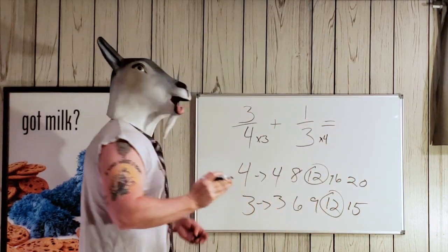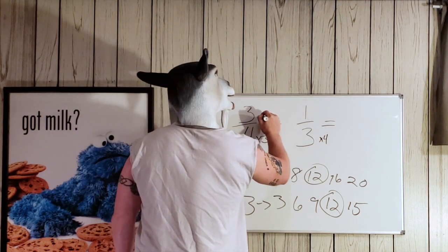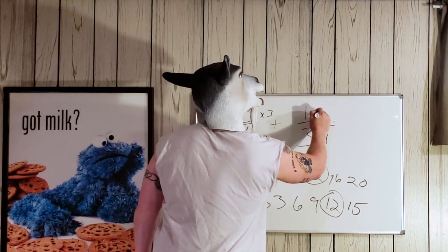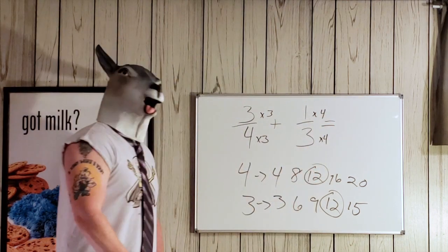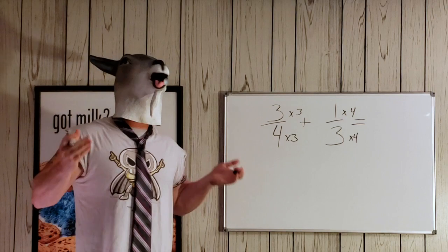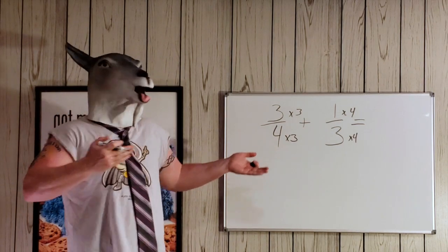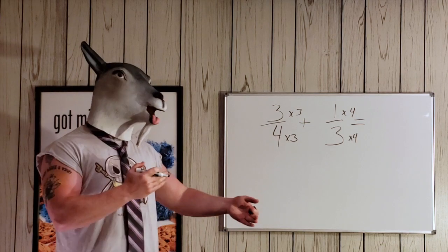And remember, you do something to the bottom one, you've got to do it to the top. So this is going up here, it's going to be times 3, and this one over here is going to be times 4. That's the first thing we have to do. Now we have our least common denominator. We can go ahead and put this problem to bed.